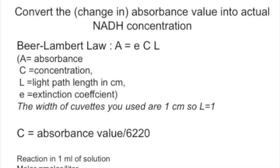The Beer-Lambert law states that absorbance equals extinction coefficient times concentration times the light path length, which in this case is 1 cm. Effectively, if you divide your absorbance by the extinction coefficient — which in this case is 6,220 — you will obtain the actual concentration of NADH in your solutions.